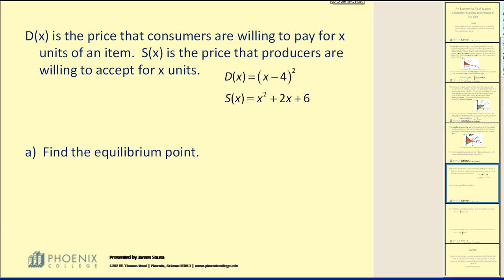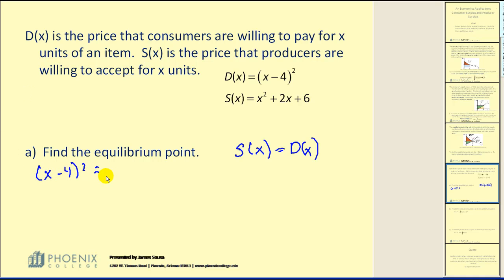Let's look at an example. D(x) is the price that consumers are willing to pay for x units of an item, and S(x) is the price that producers are willing to accept for x units. Find the equilibrium point. The equilibrium point occurs when the supply function equals the demand function, so we set (x minus 4) squared equal to x squared plus 2x plus 6.